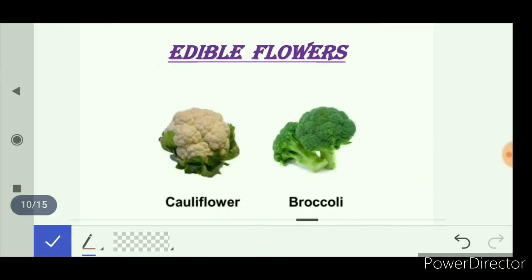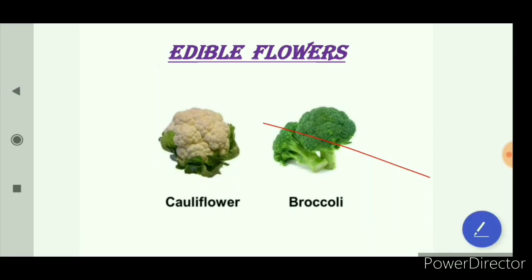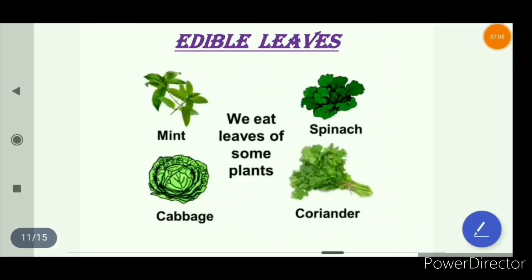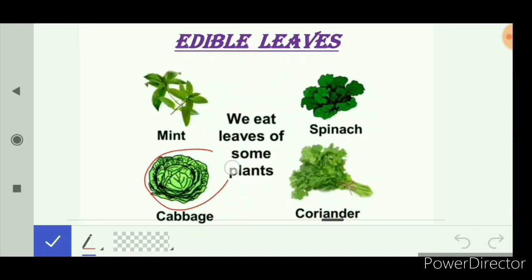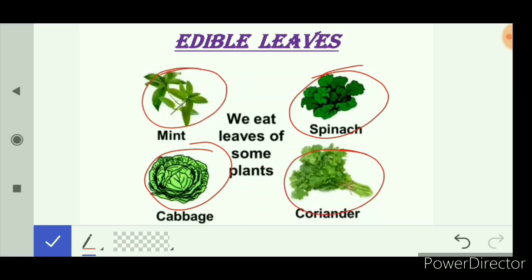Next are edible flowers. Examples are cauliflower and broccoli — these are the flower part of the plant that we eat as food. Edible leaves: we eat leaves of some plants. Examples are cabbage and spinach, which are leaves of the plant that we eat as food, called green leafy vegetables. Mint and coriander are also leaves of the plant that we eat as food, and are used to make chutney.